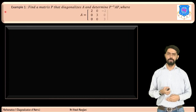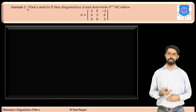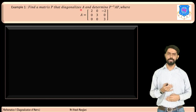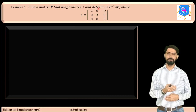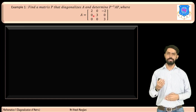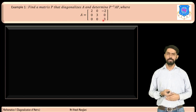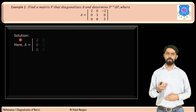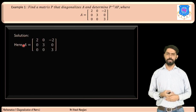Let us discuss the first example. Find the matrix P that diagonalizes A and determine P inverse AP, where A equals the matrix [2, 0, -2; 0, 3, 0; 0, 0, 3]. First, we will find the eigenvalues of this matrix.